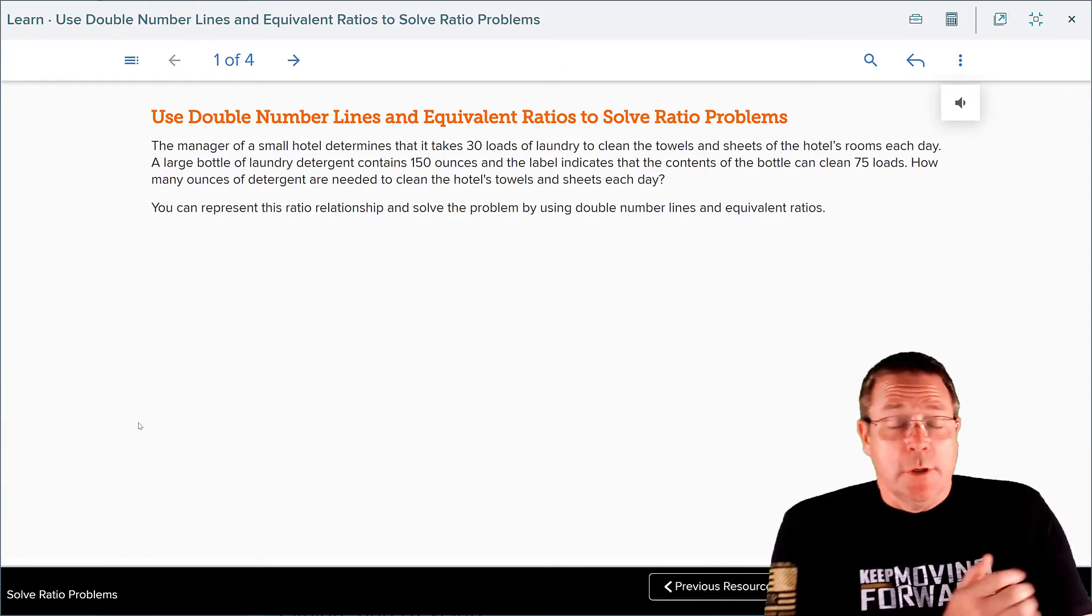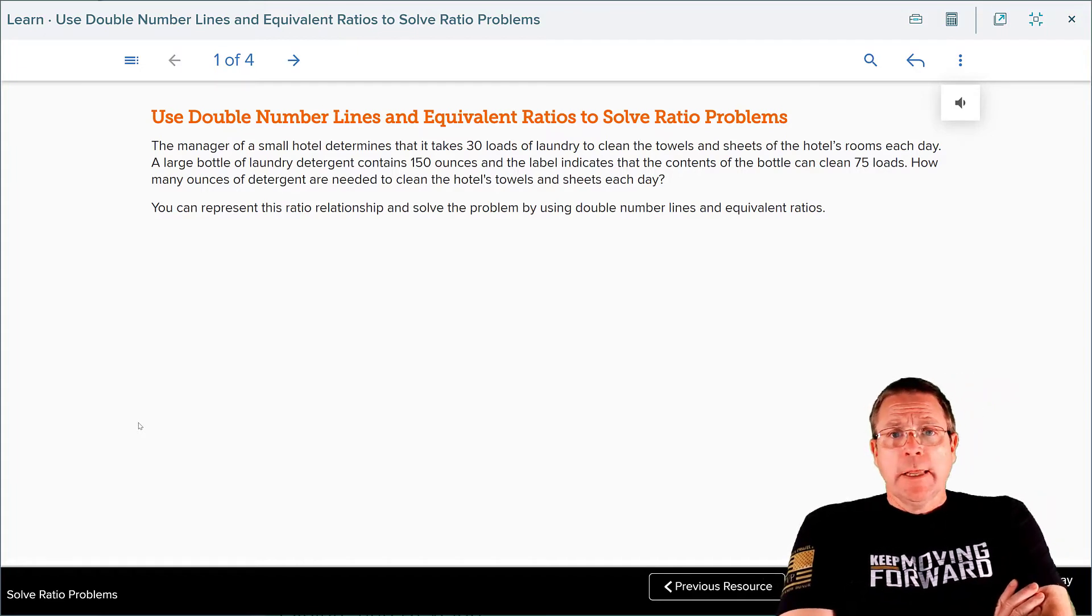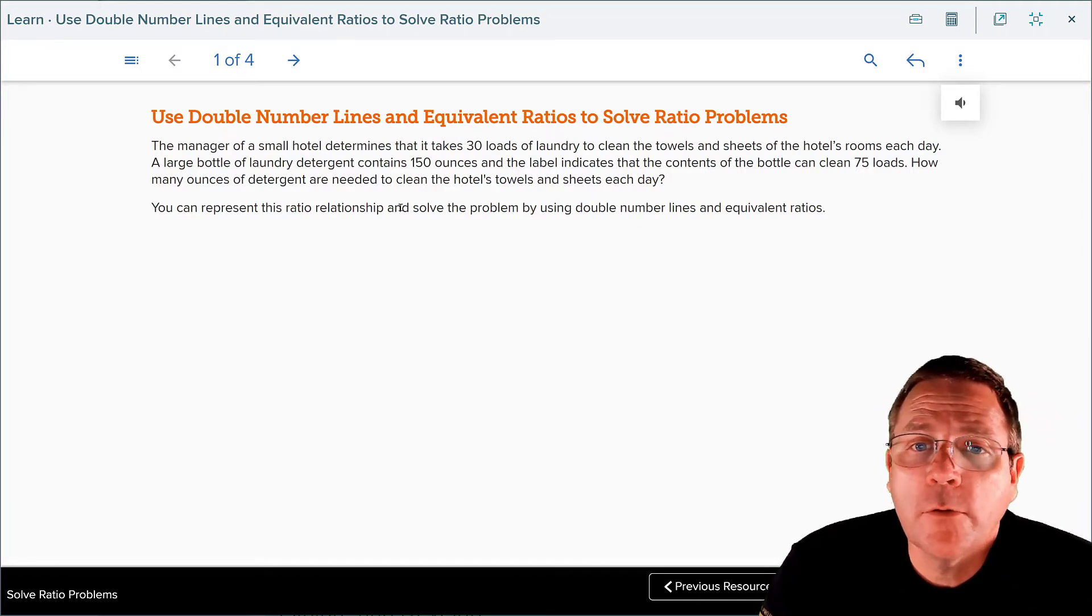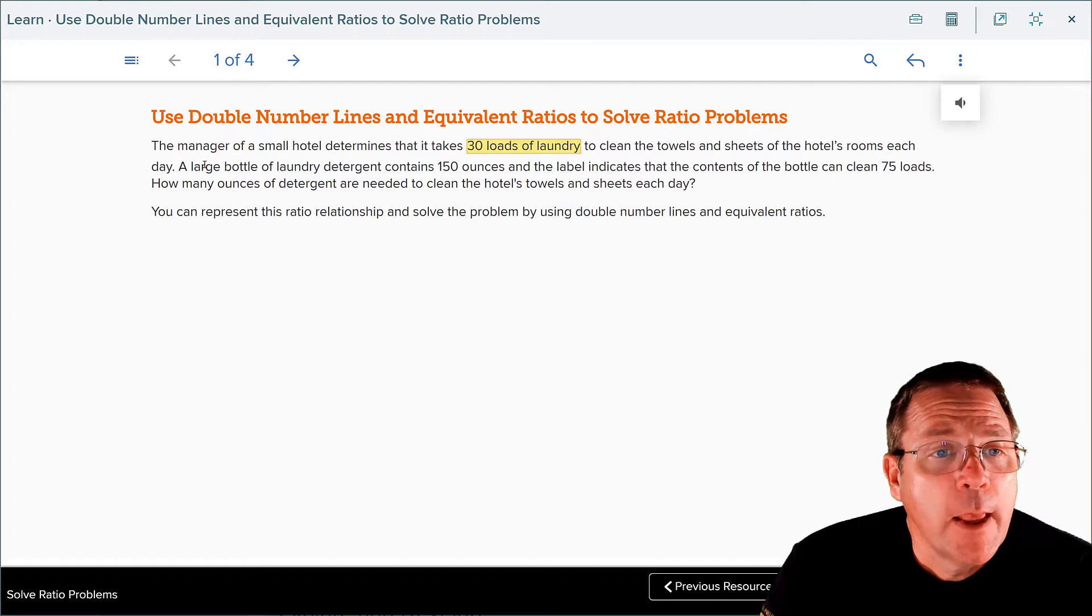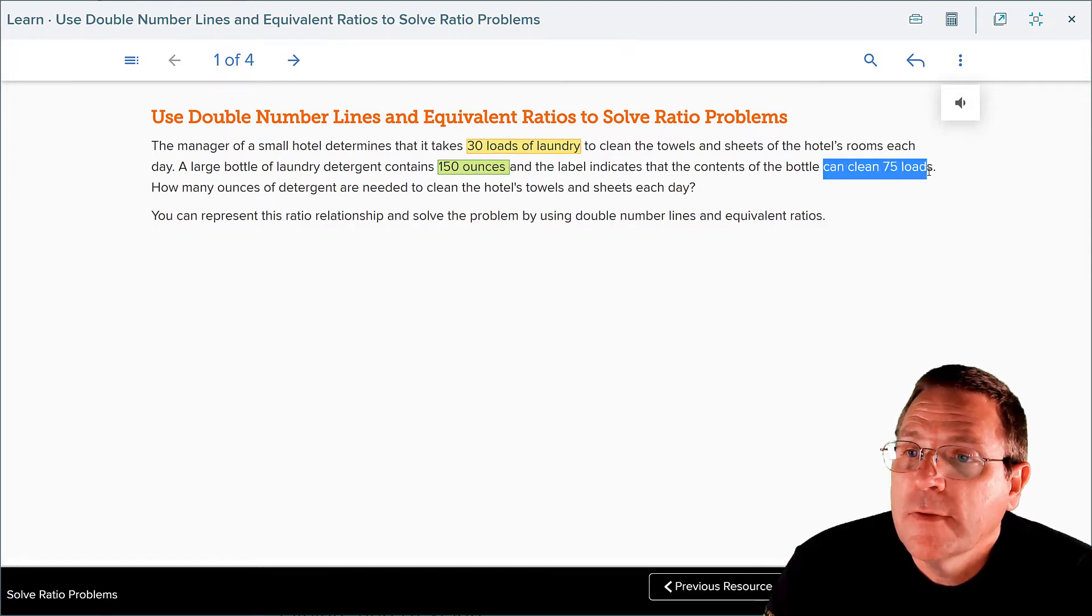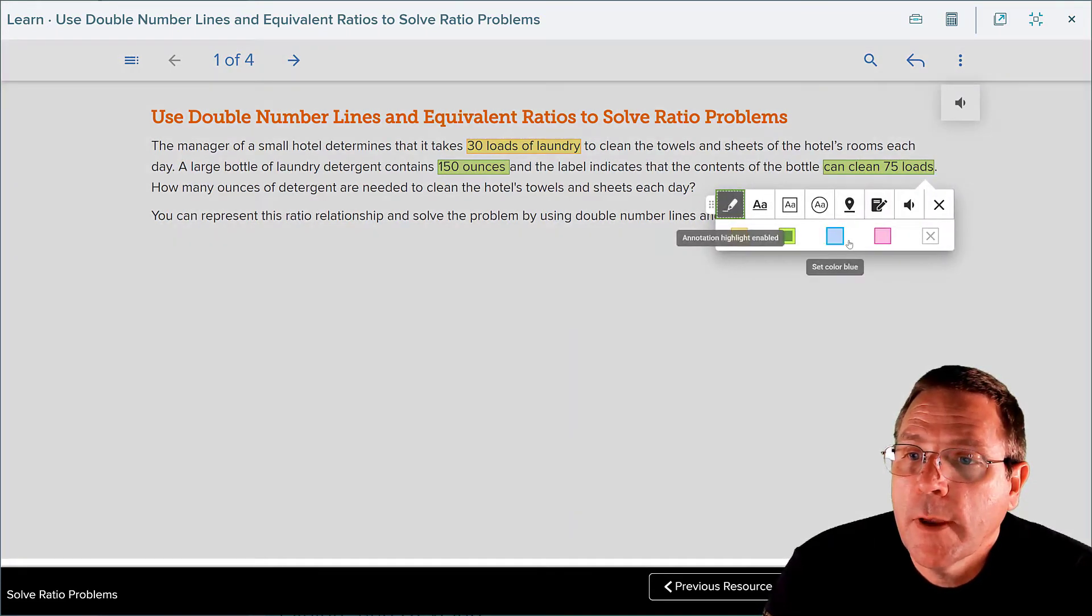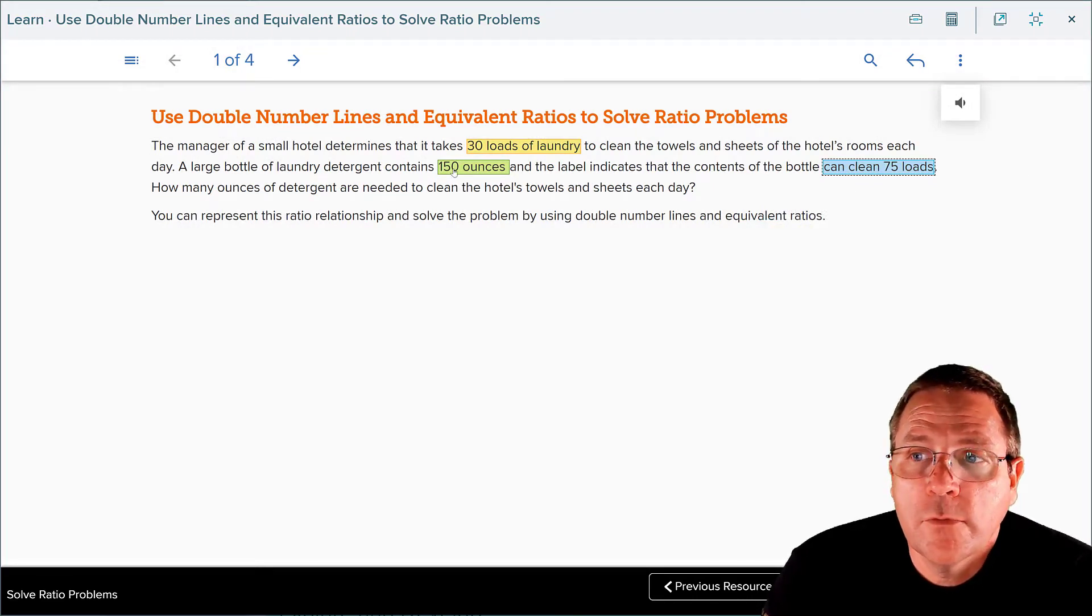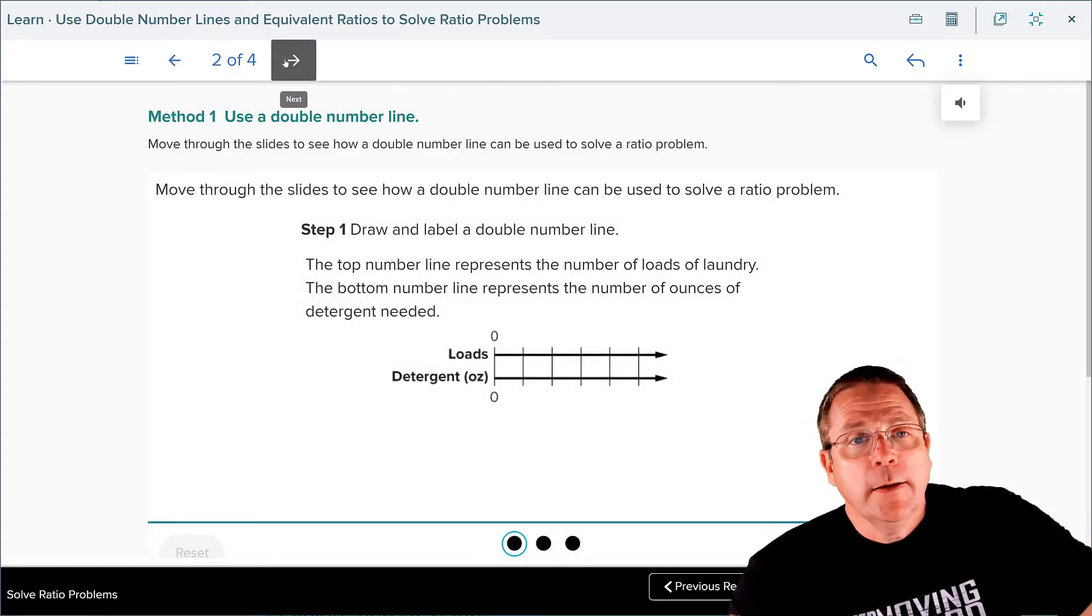Now we're going to use double number lines and equivalent ratios to solve ratio problems. The manager of a small hotel determines it takes 30 loads of laundry to clean the towels and sheets. A large bottle of laundry detergent contains 150 ounces and the label indicates that the bottle can clean 75 loads. So it's 75 loads for every 150 ounces. That's important to remember because they're going to use that in making their double number line.